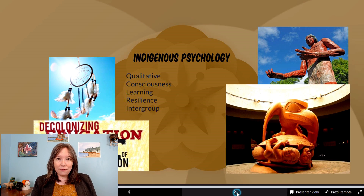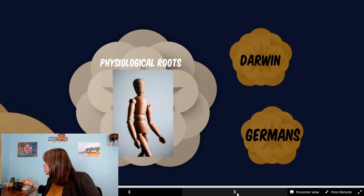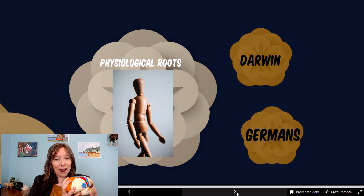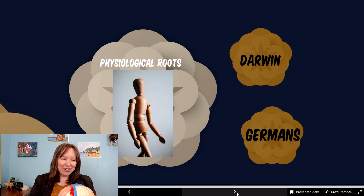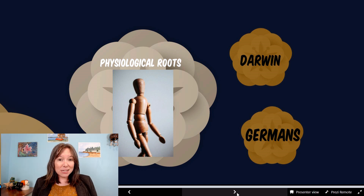Aside from our philosophical roots, it's important to also talk about the physiological roots. When we talk about physiological roots, it's very common to just think about the brain. Although the brain is really the showstopper and the spotlight, there's a lot more going on in our bodies relevant to psychology than just the brain. Before psychology was formalized as a discipline, there were people studying biology and physiology that helped to shape the psychological narrative.